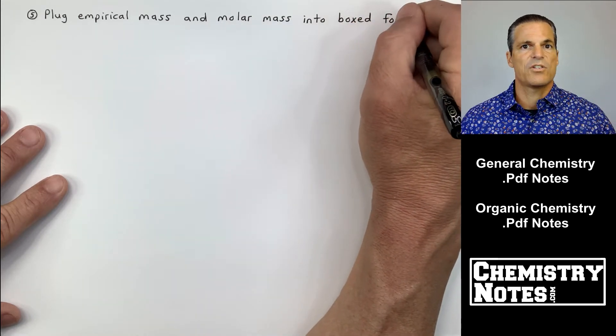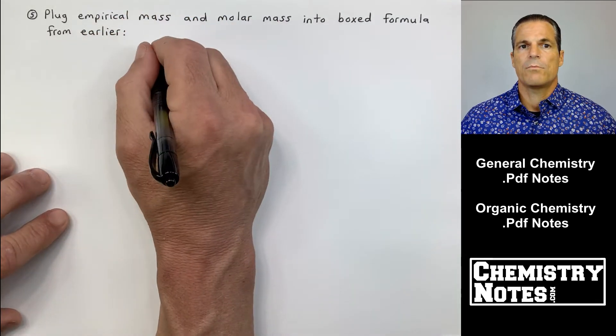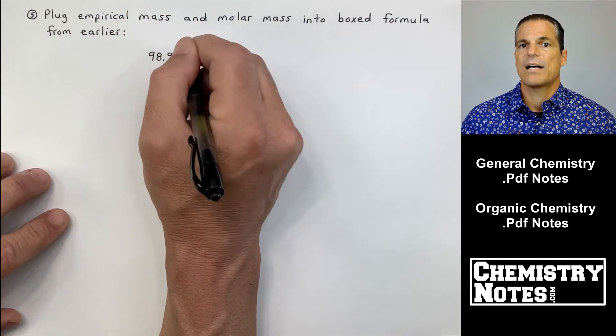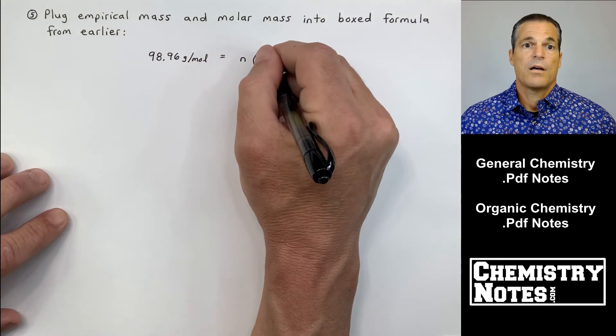98.96 equals n times 49.48. n is clearly two, so I multiply my empirical formula through by two. If I distribute the two through CH2Cl, I end up with C2